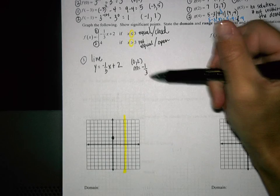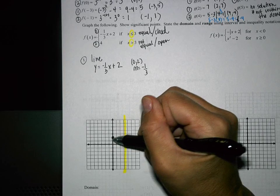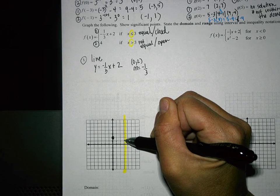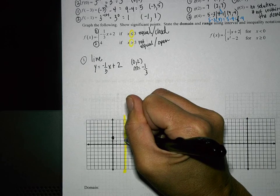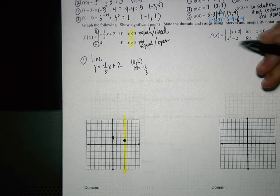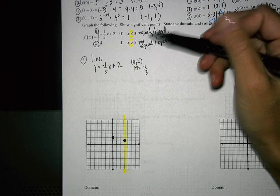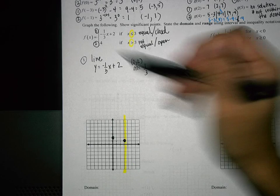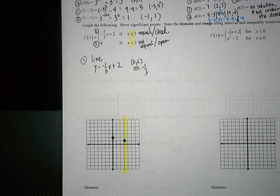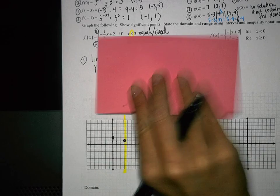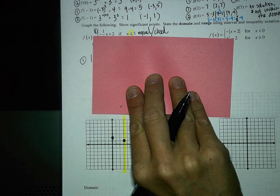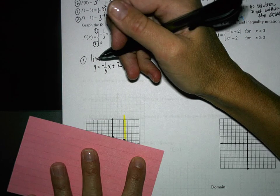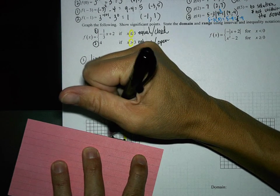From there I use my slope: down 1, right 1, 2, 3. Is this going to be open or closed at the highlighted line? Closed, because it had the equal to sign. I already found the value when I hit that line, so I don't need to plug in the 3 value again. This is a line doing all values less than 3, so I draw the line to the left.